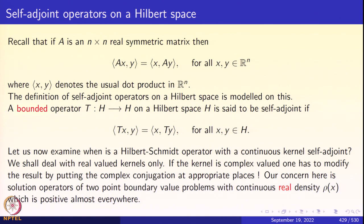A bounded operator T from H to H on a Hilbert space is said to be self-adjoint if the inner product ⟨Tx, y⟩ equals ⟨x, Ty⟩ for all x, y in H. I want to emphasize that this definition is for bounded operators. For unbounded operators, this would be the definition of a symmetric operator — self-adjointness of unbounded operators is a tricky business and we are not going to discuss that here.